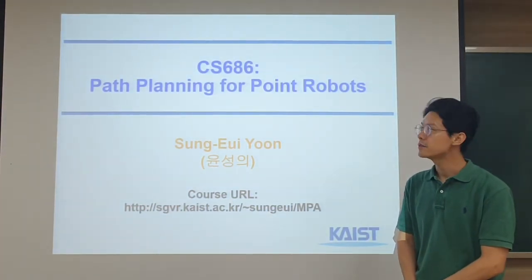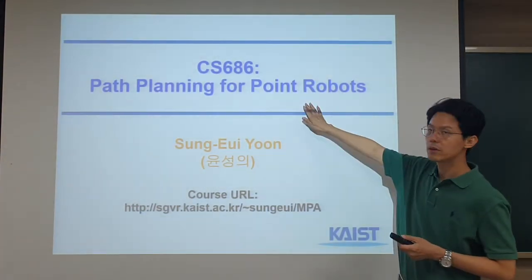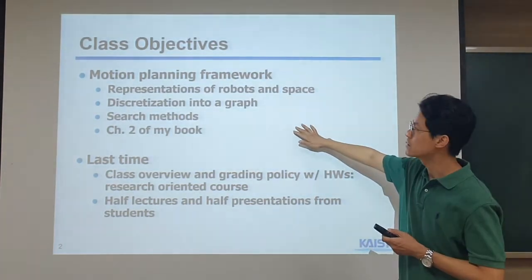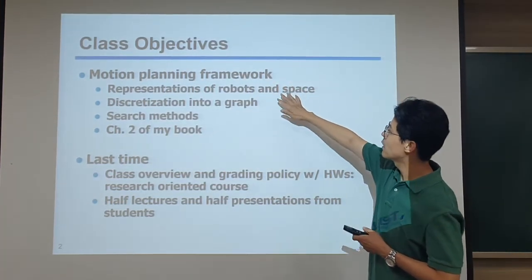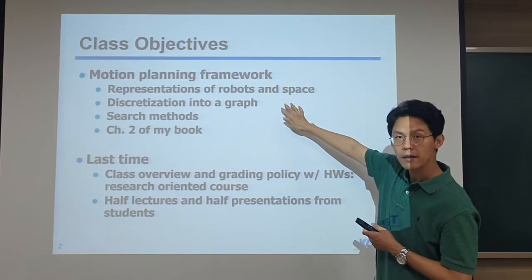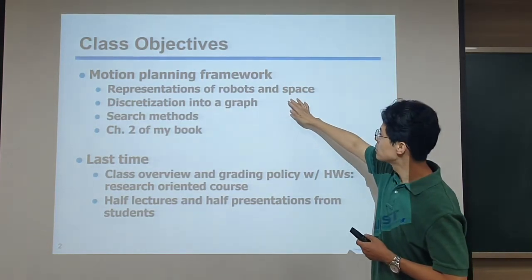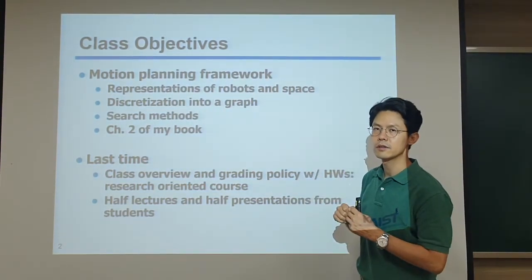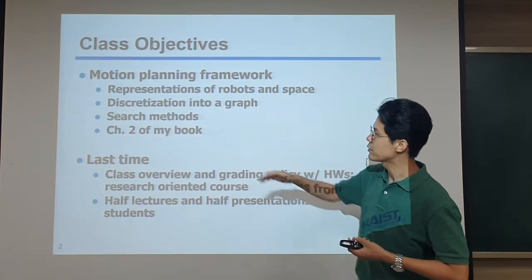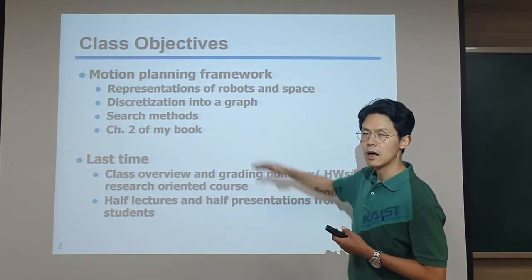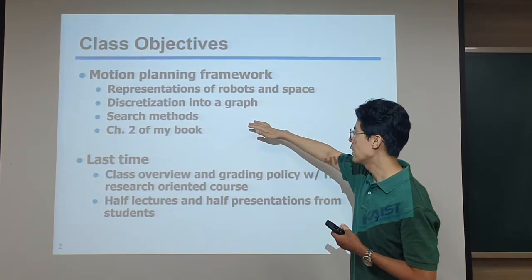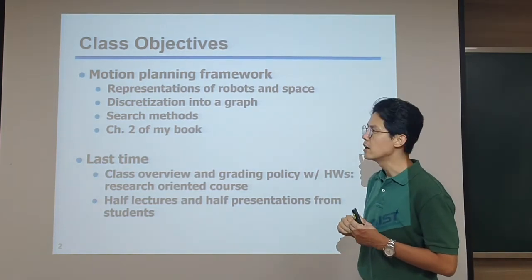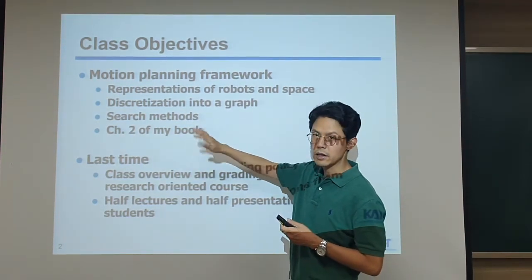Hello, welcome back to today's class. Today we will talk about path planning for a point robot. Our objectives are the overall motion planning framework: first, representation of the robot in space, then how we can discretize that representation into a graph so that we can do search-based planning. Details of today's discussion are in chapter 2 of my book.